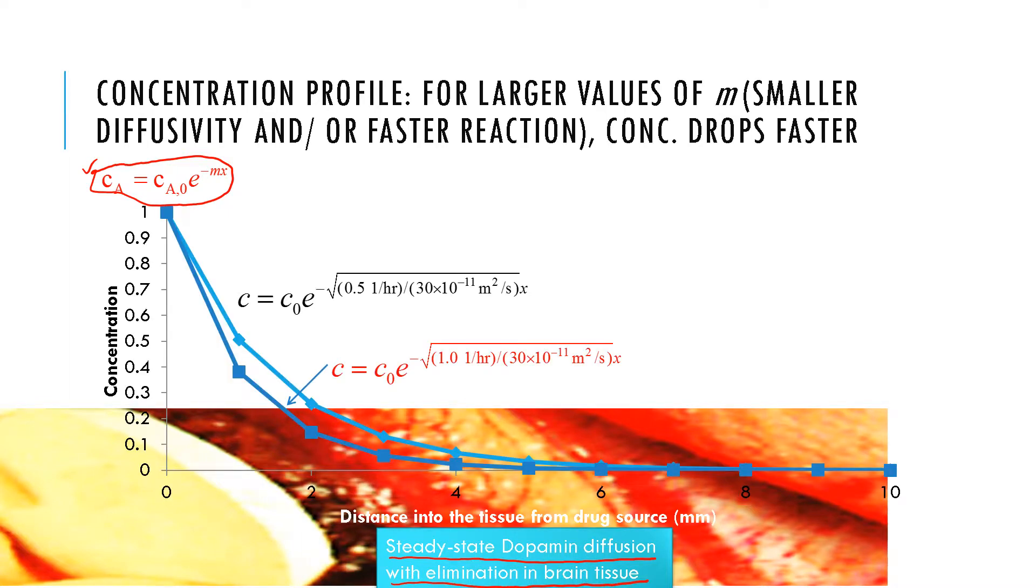If we plot this solution for two different values of M, where M is the square root of k double prime over D, we compare a larger value of M to a smaller one. M large means it's for a faster reaction or for a lower diffusivity.